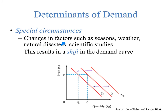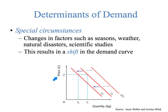Lastly, special circumstances: a change of seasons, weather, natural disasters, or scientific studies might result in a shift in the demand curve one way or the other. If this were the market for bathing suits headed towards winter, demand would go down; headed towards summer, demand would go up. That could also happen for natural disasters, weather changes, or scientific studies finding that something is bad or good for your health — like the chicken example. These would change demand, resulting in a shift of the curve because special circumstances are not represented on the graph.